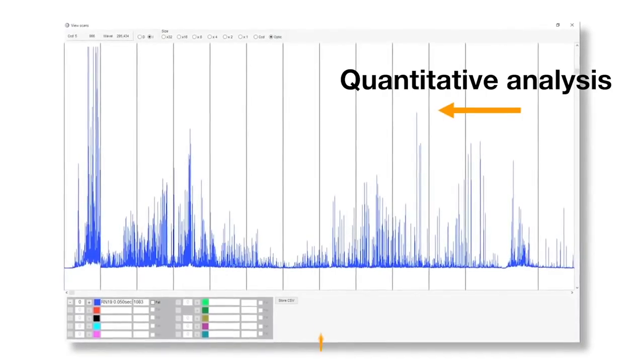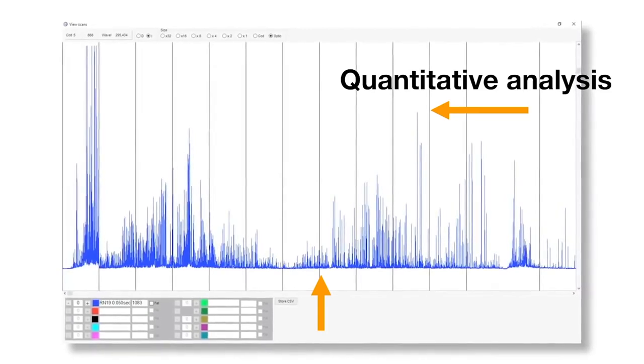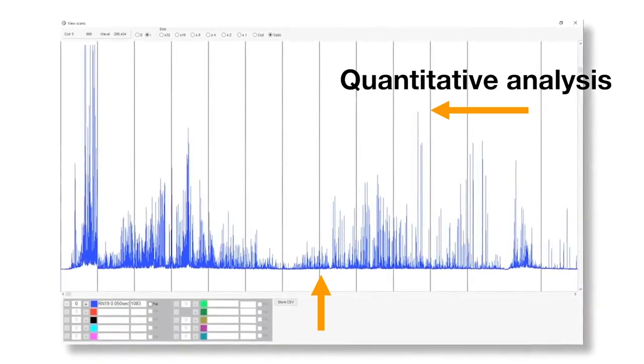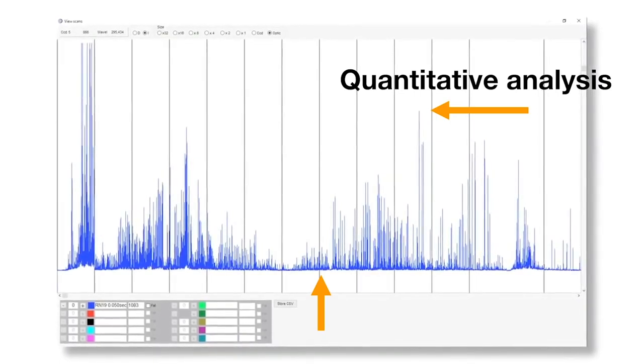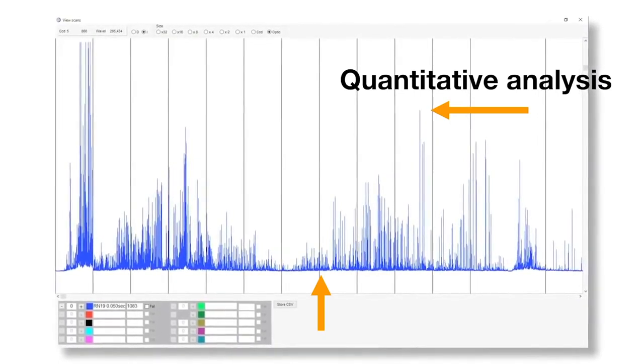However, OES is also a quantitative technique. As we can see, the peak wavelength identifies the element and its peak area or intensity gives an indication of its quantity in the sample. The analyzer then uses this information to calculate the sample's elemental composition based on a calibration with certified reference material.